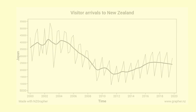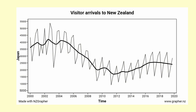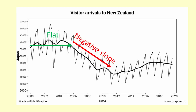Sometimes a time series has different segments where the trend behaves differently. I will show this on this graph of visitor arrivals to New Zealand from Japan. We can see that the numbers arriving for the first five years were pretty stable — there is a flat trend line. Then from 2005 to 2012 the number of arrivals is decreasing, as you can see with the negative slope.